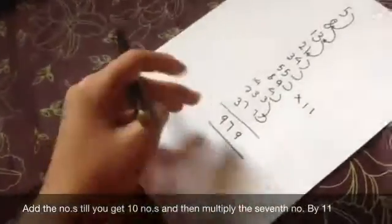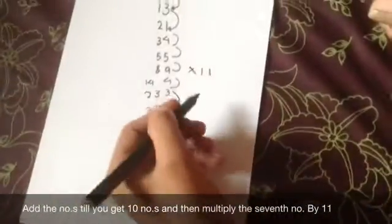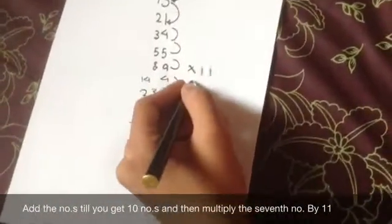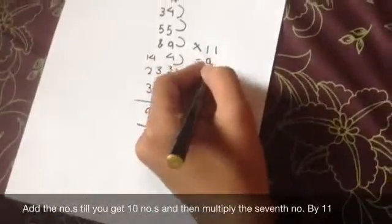OK. So you do 89 into 11, and you will get 89 into 11 is equal to 979.